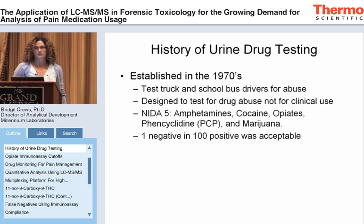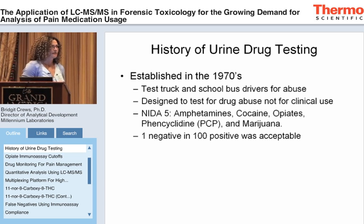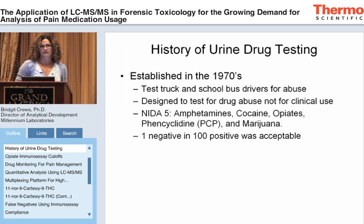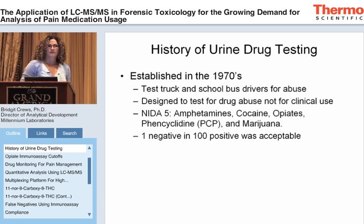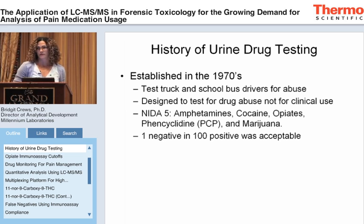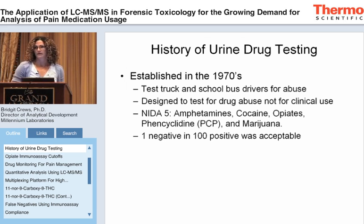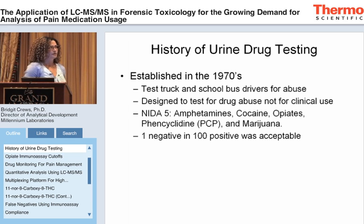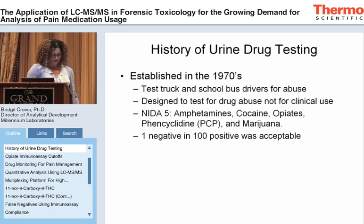I'll start with a history of urine drug testing. Urine drug testing was established several decades ago and was really targeted towards employees under the jurisdiction of transportation. Prior to the implementation of a federally regulated program to drug screen truck drivers, about 18% of truck drivers were positive for amphetamines, cocaine, and marijuana. The program was targeted towards measuring these drugs and a couple other drugs of abuse — the NIDA-5 — and it was based on immunoassay and gas chromatography.